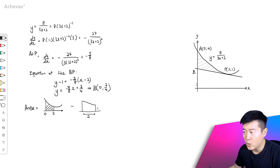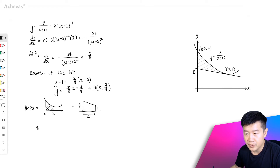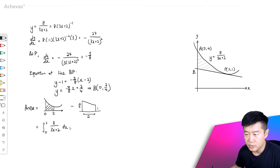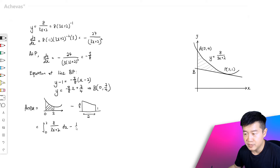And OB, which is 7 over 4, represents this length here, so this is 7 over 4. So the area will be integrating from 0 to 2 of the curve, which is 8 over (3x plus 2), minus away the area of the trapezium: half times height times sum of parallel sides.